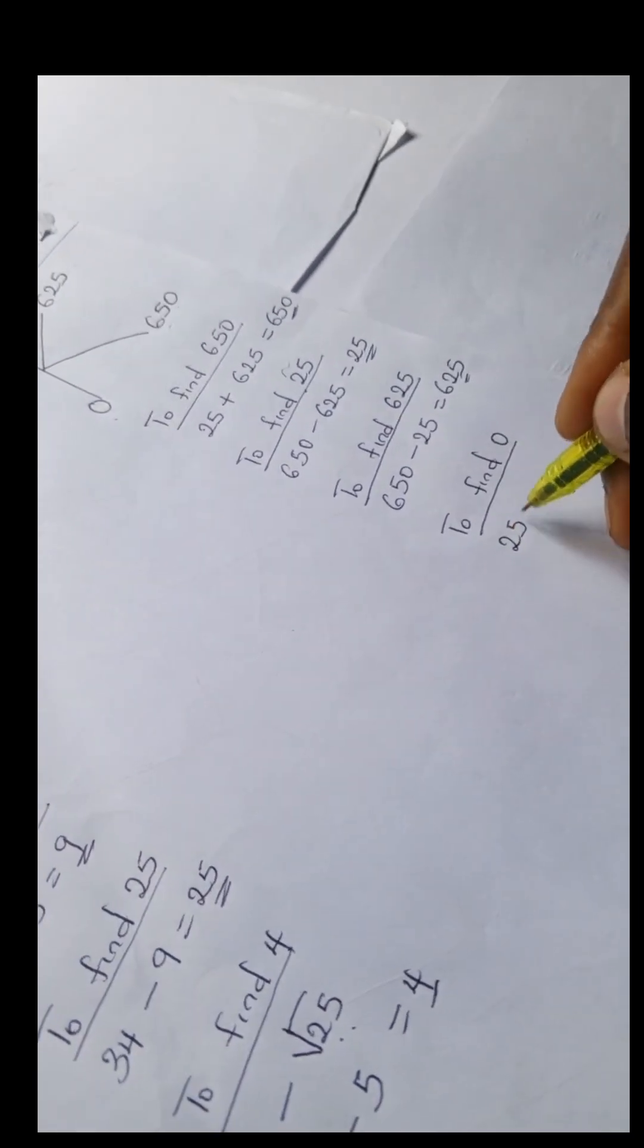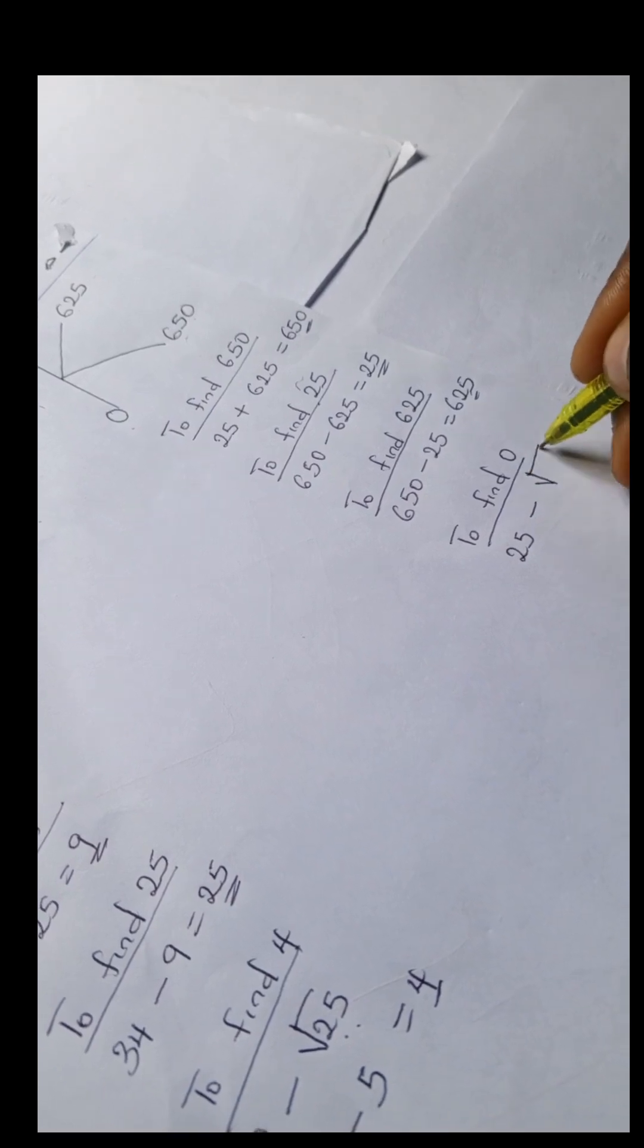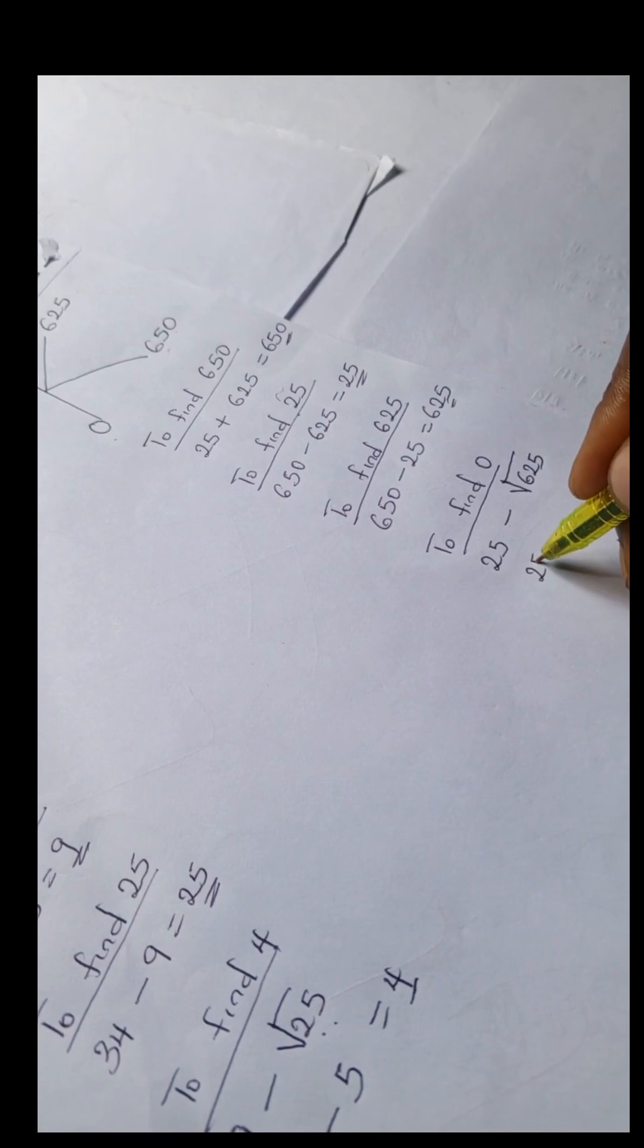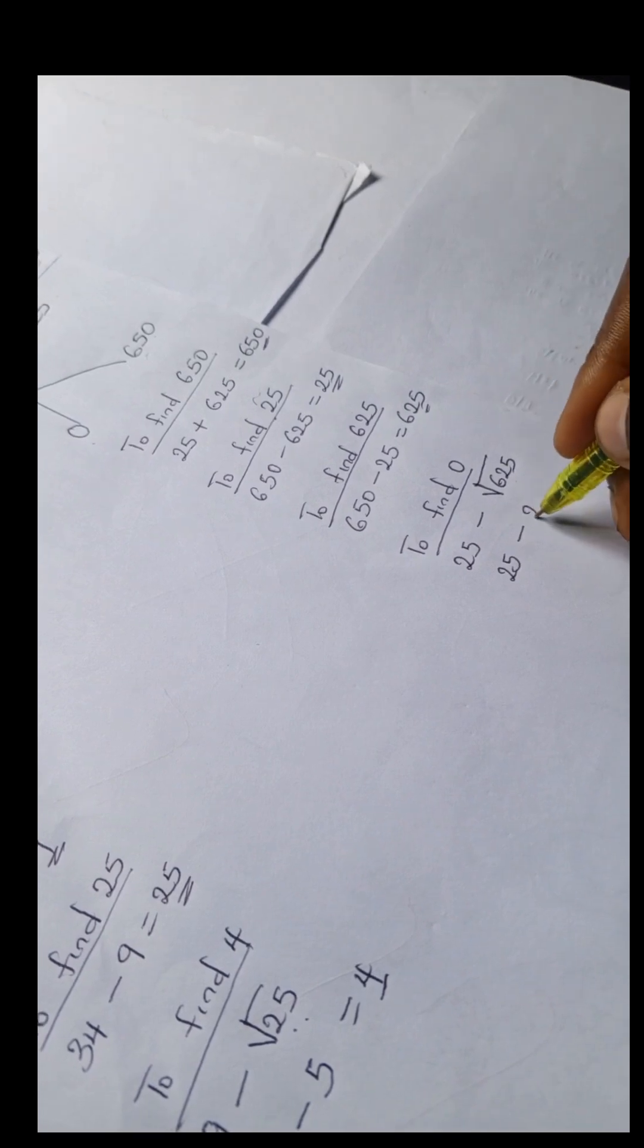Okay, so we're going to have 25 minus square root of 625. And 25 minus square root of 625... the square root of 625 is also 25.